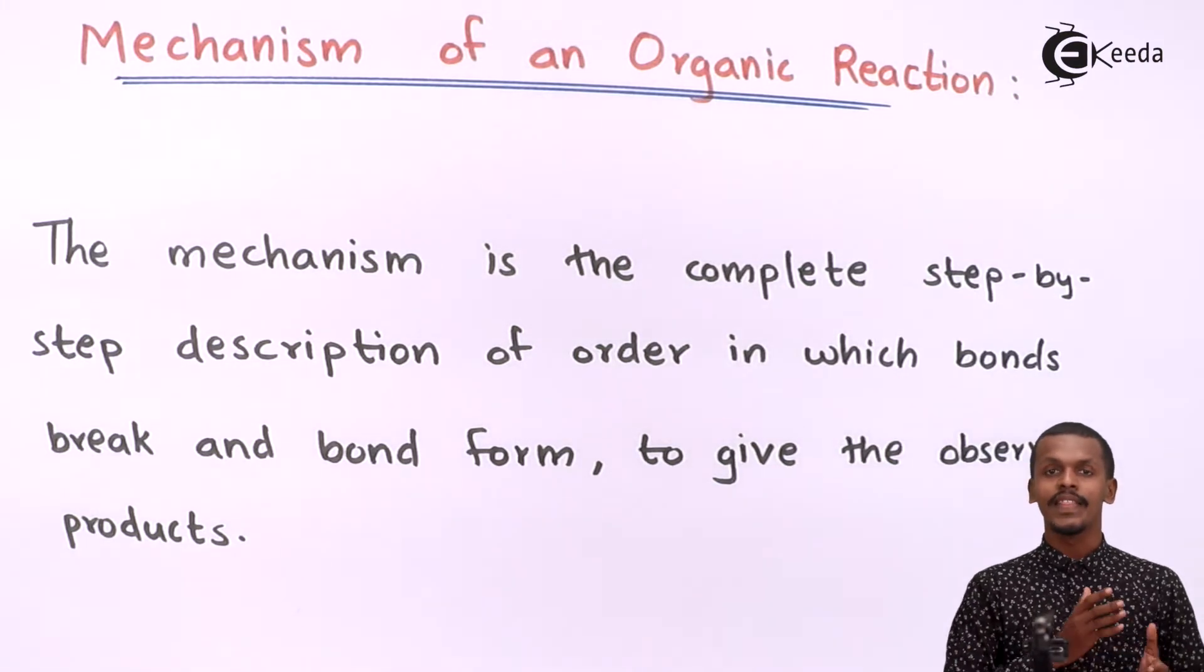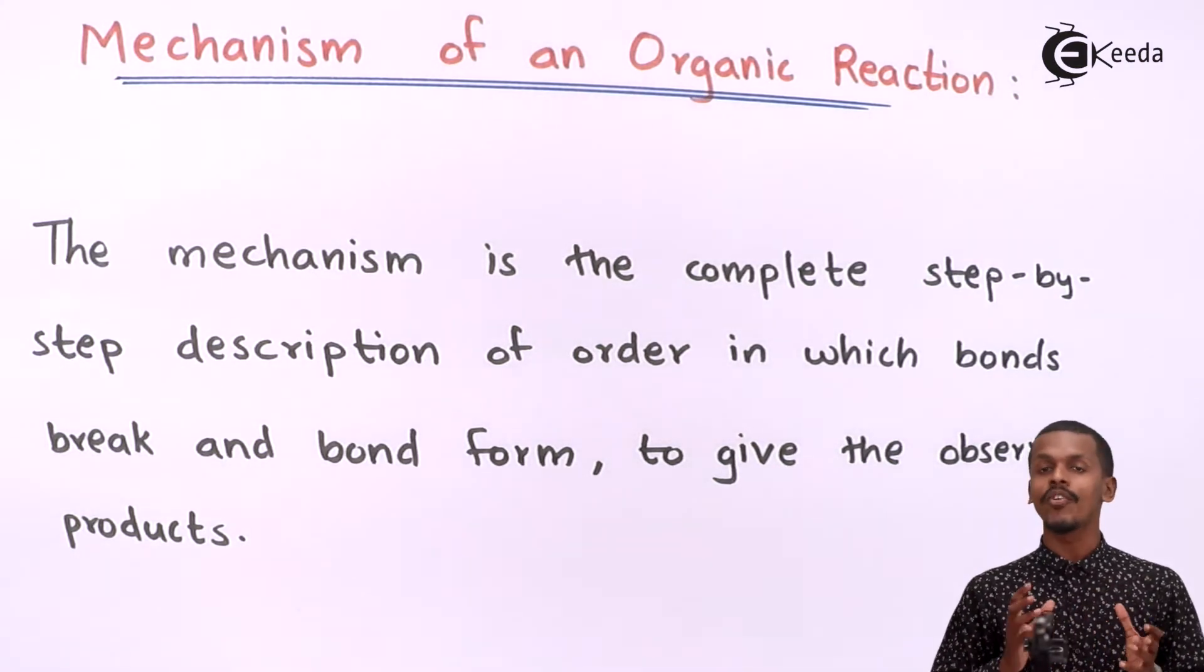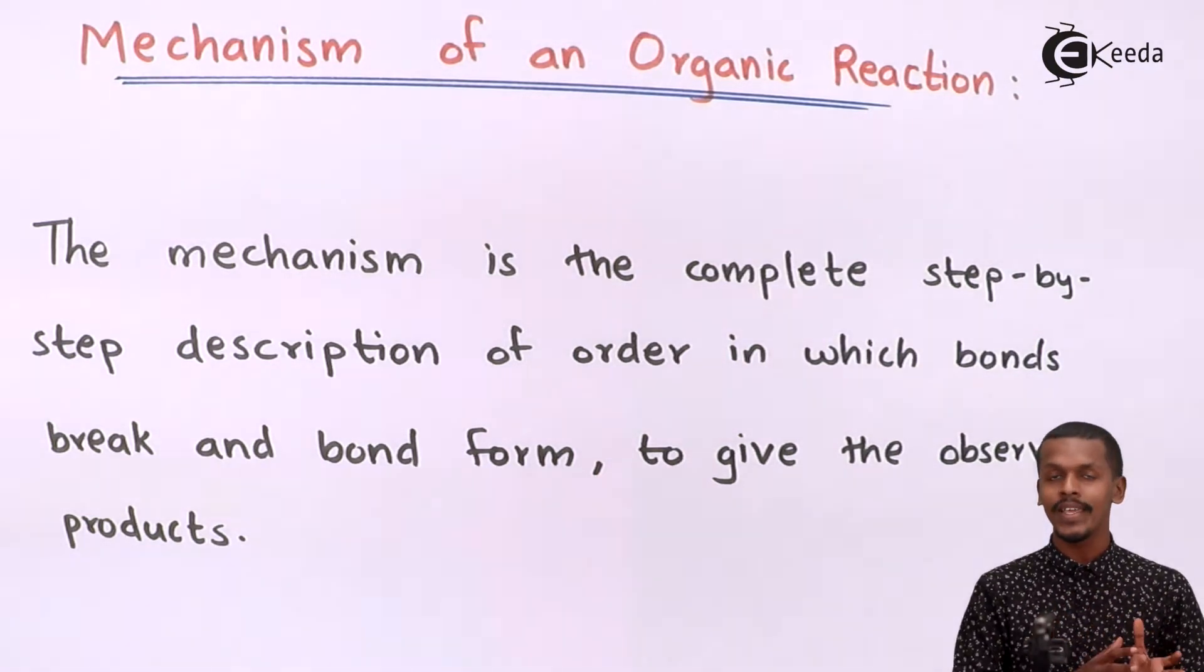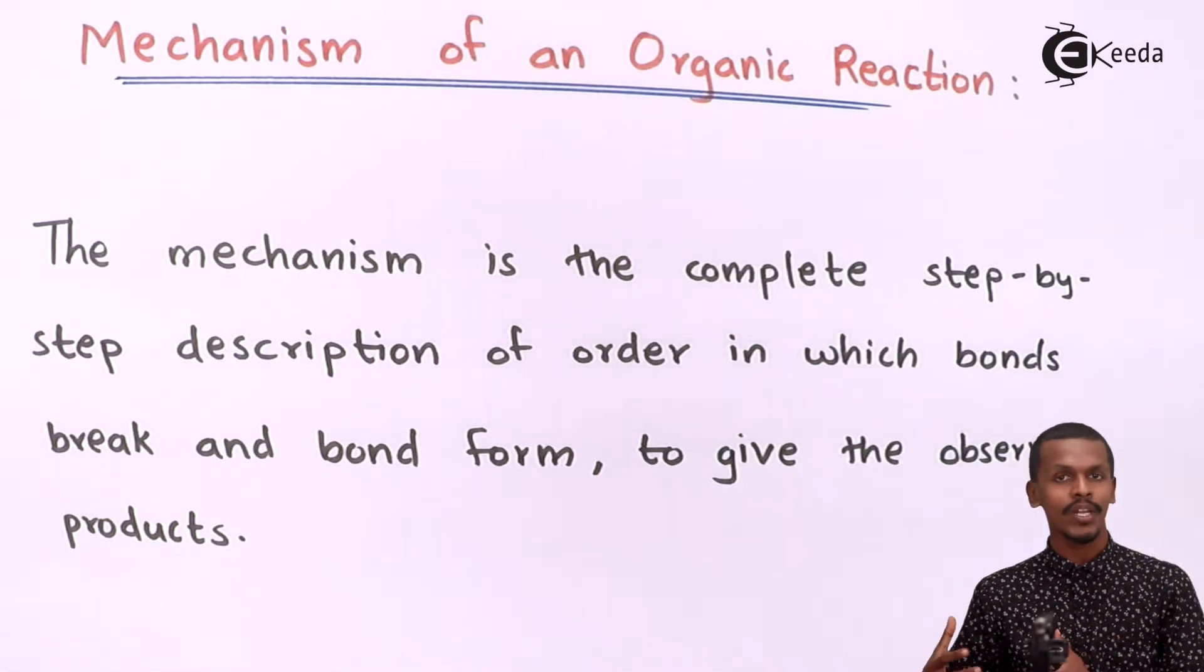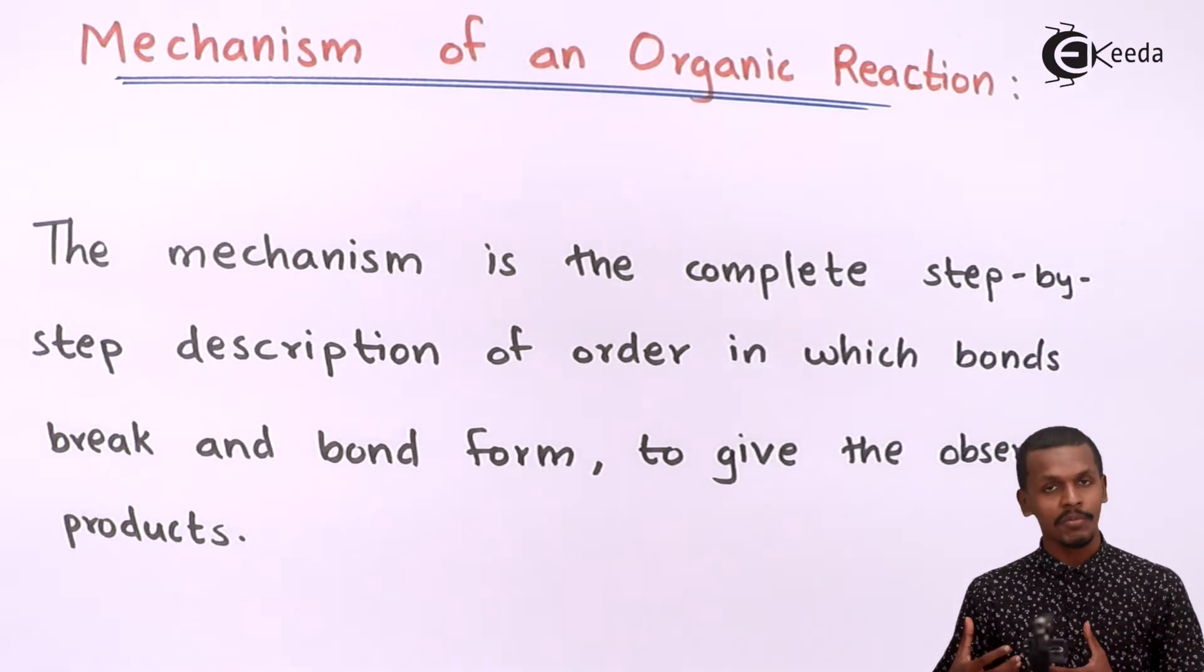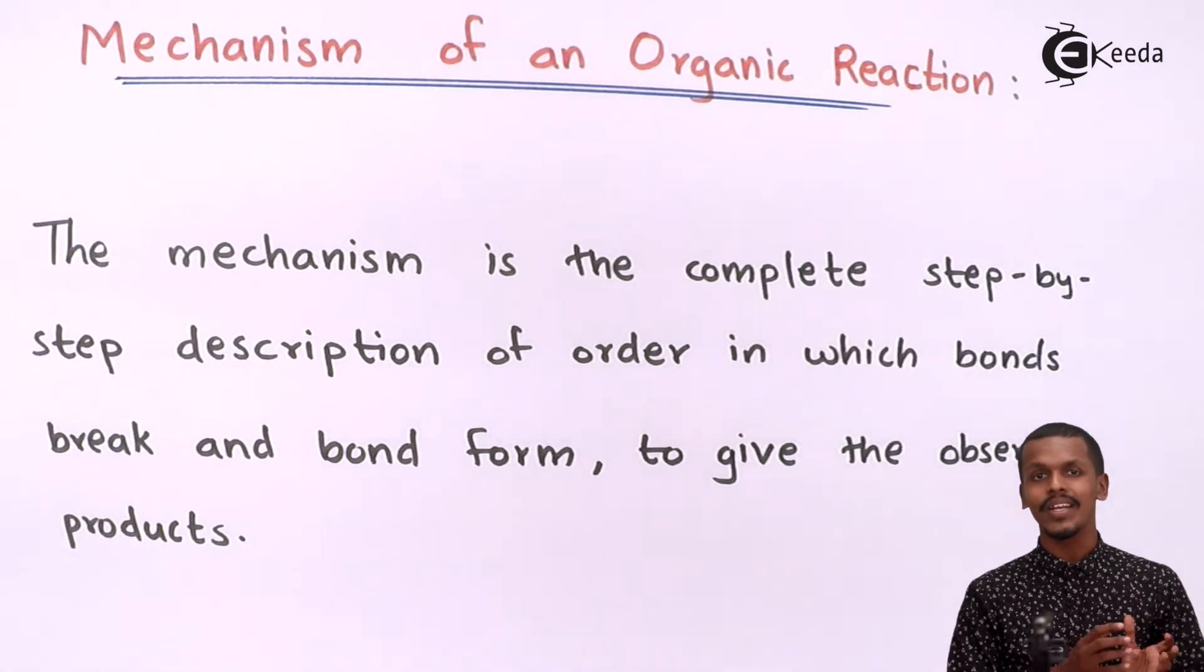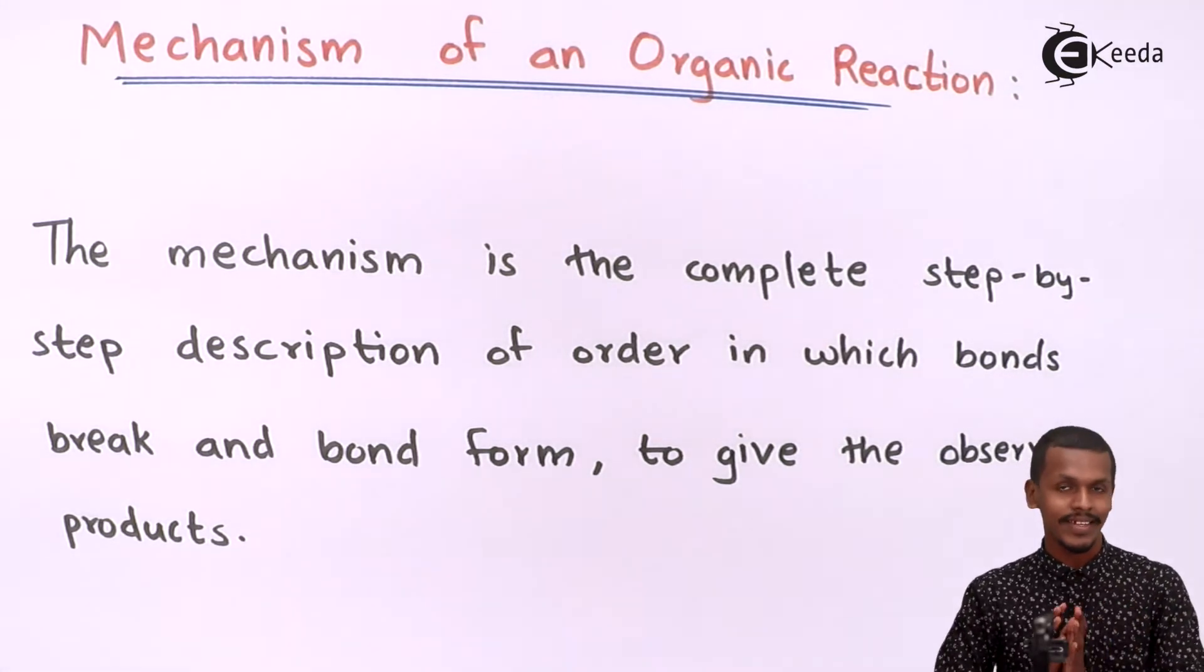So in this case, bond breaking takes place as well as bond formation takes place. This description is shown in the mechanism, and from that we could predict what would be and how the product has been formed. We show the description from where we could understand that the reaction has occurred through that step.